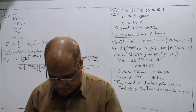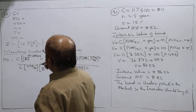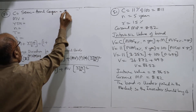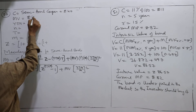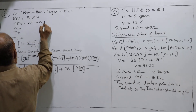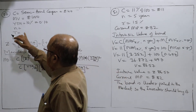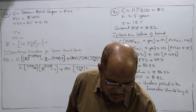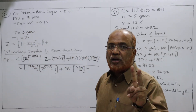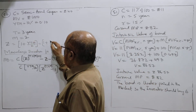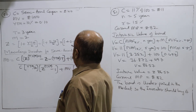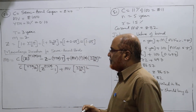We take the values: C equals 40 rupees (semi-annual coupon). Maturity value equals rupees 1000. YTM equals 10%, that is 0.10. Time period T equals 3 years from now. M equals 2 because every year interest is paid two times. Z equals 1 plus YTM divided by 2, that is 1 plus 0.10 divided by 2, equals 1 plus 0.05, equals 1.05. This is the Z value.